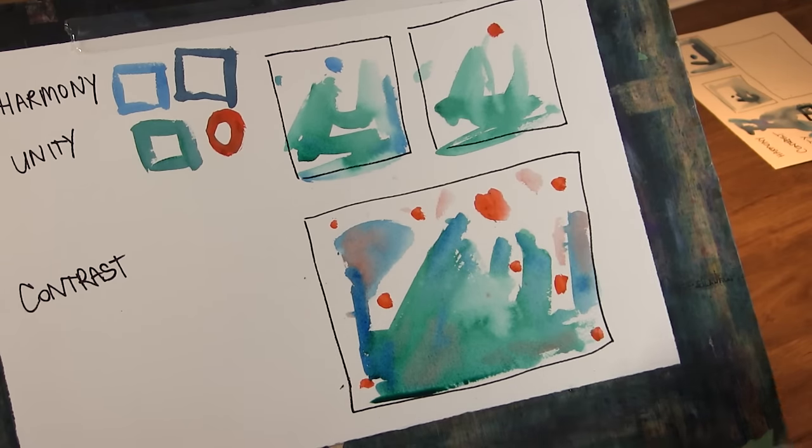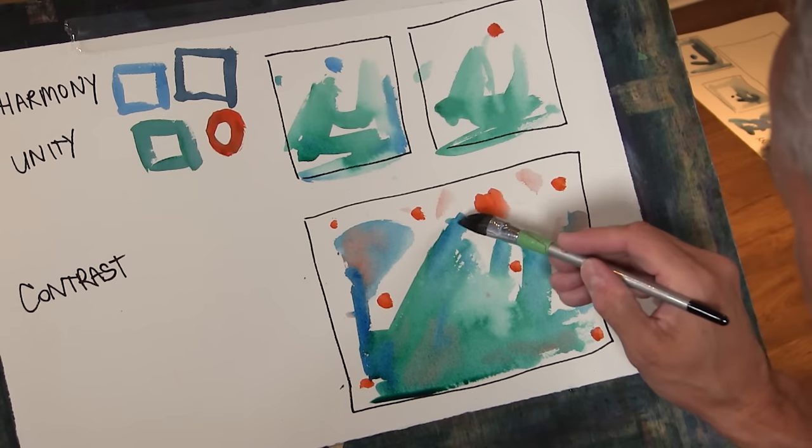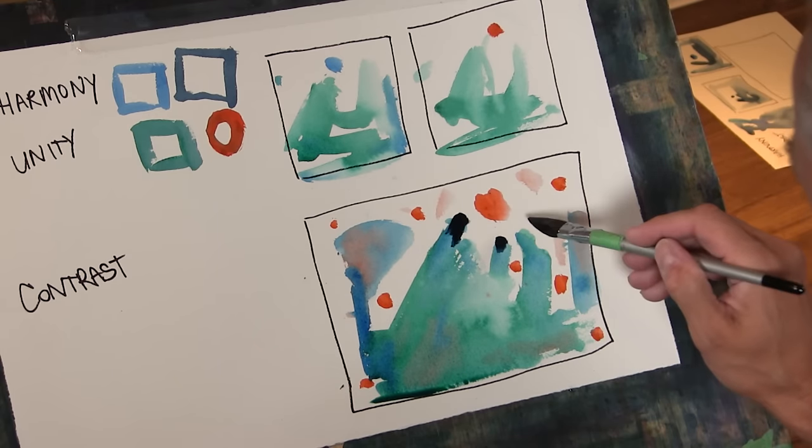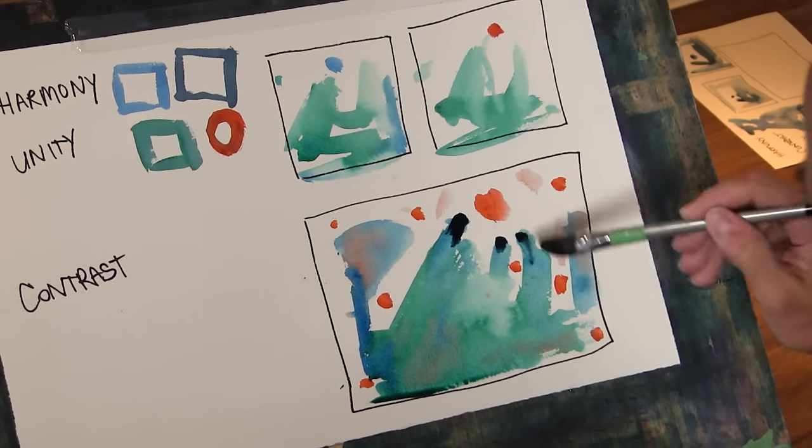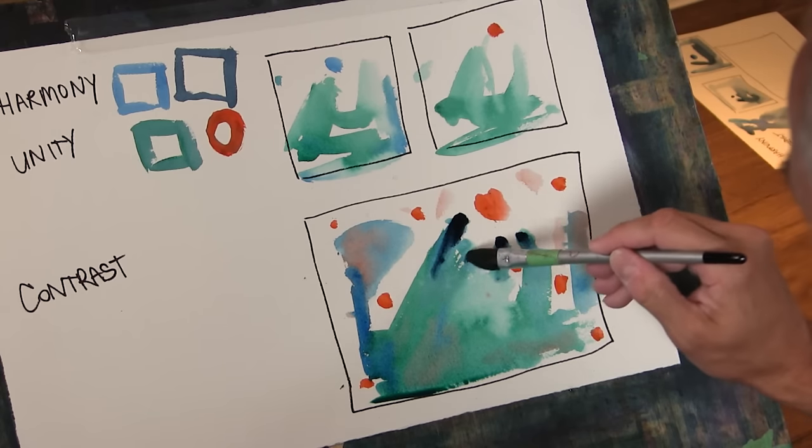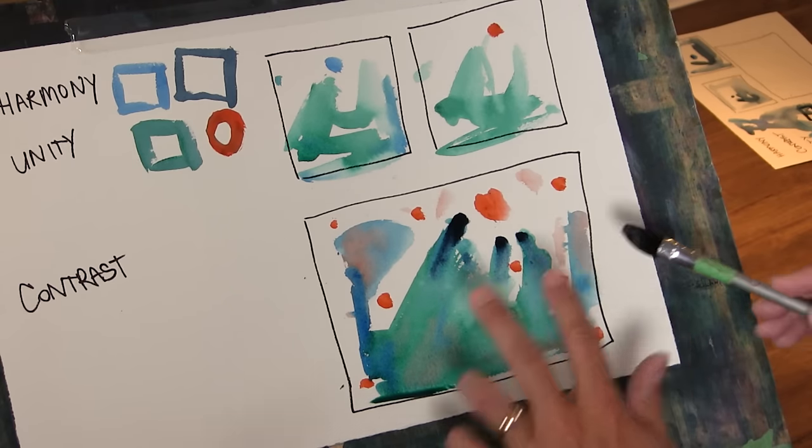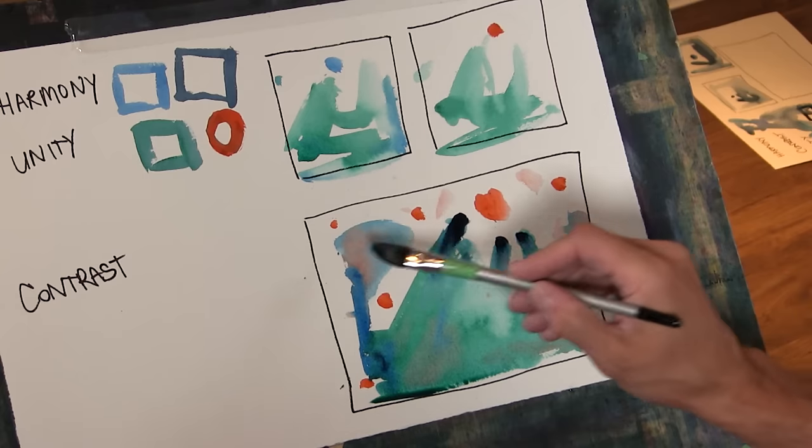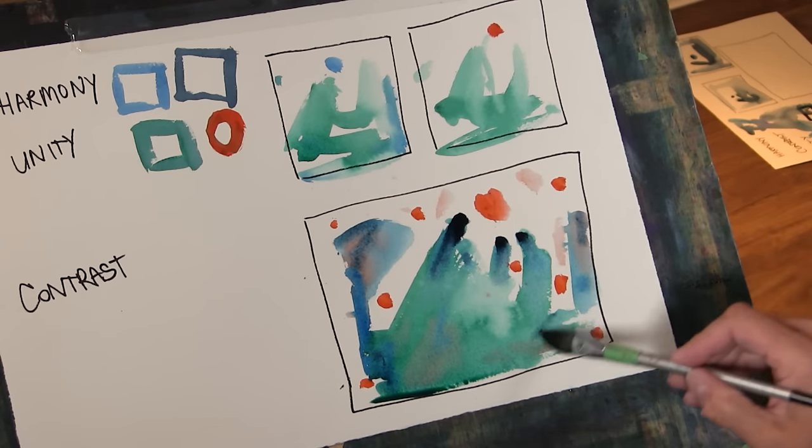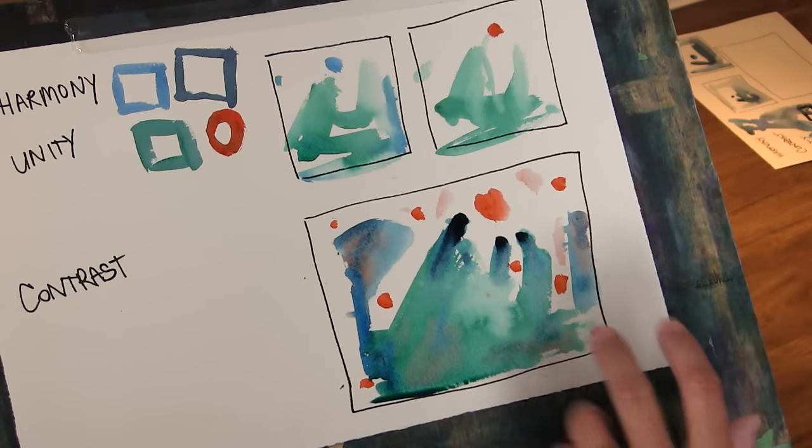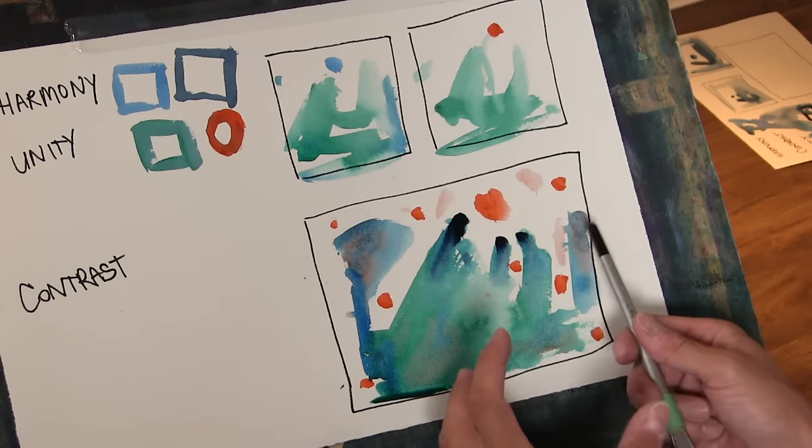This one, if we want to draw the eye here, another way is we can increase the value contrast up here. So get that blue very dark and bleed it out, but now we've got this dark value that doesn't appear anywhere else, so we need to introduce a little bit of that color in other areas.